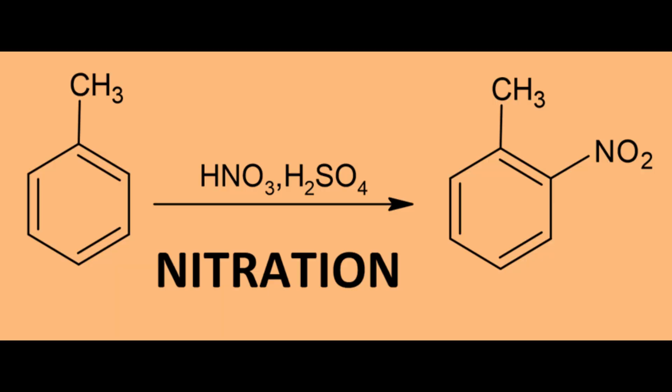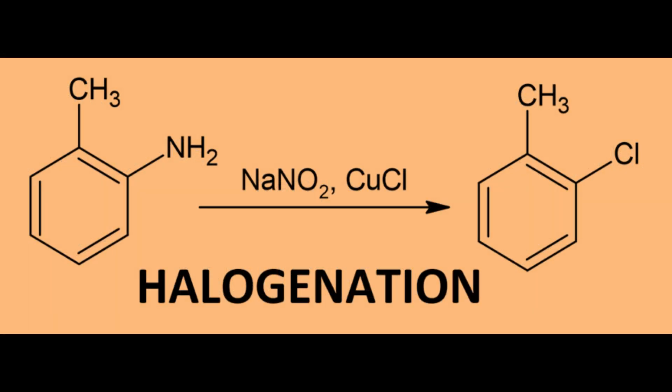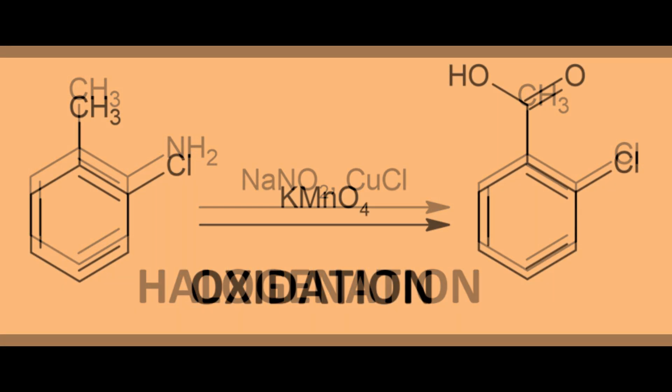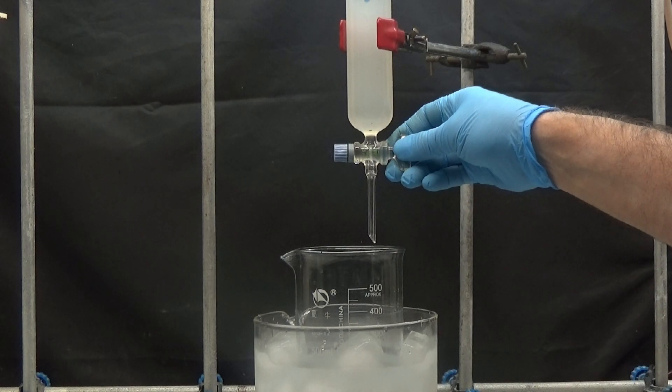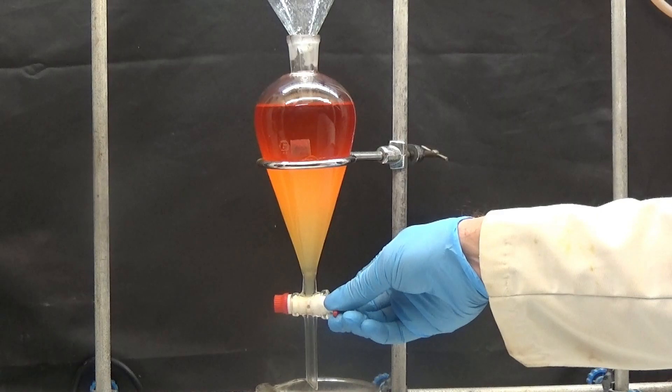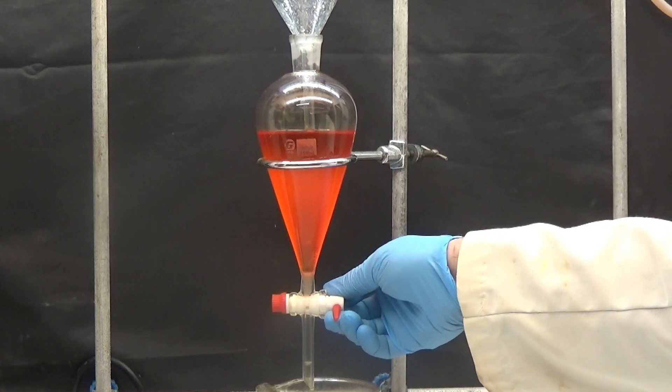The synthesis consists of four steps: nitration, reduction, halogenation by the Sandmeyer reaction, and finally oxidation of the methyl group of toluene. We are going to start nitrating toluene with nitric acid. I cannot show the details of the nitration in the video because YouTube censors me.